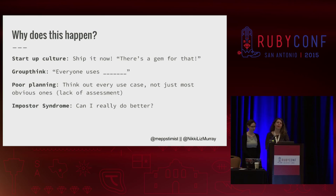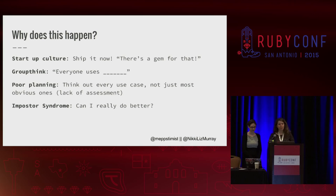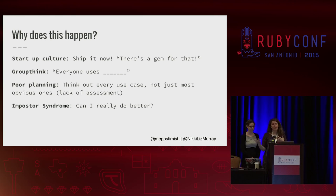Why can this happen? Some of you have probably come to projects wondering how the gemfile came to be this way. There's startup culture — the idea of we have to get this out the door now, all that matters is that it works, so you say there's a gem for that and throw it in. There's the idea of groupthink — everybody uses this gem for that solution, so obviously I should. There's sometimes poor planning: you've thought out the most obvious use cases but not the edge cases that are actually crucial. And then there's imposter syndrome — it's easy to ask, can I really do better than this gem that's supposed to be the best? Even though maybe you can, because you might know your problem way better than whoever wrote that gem.